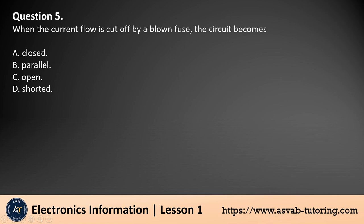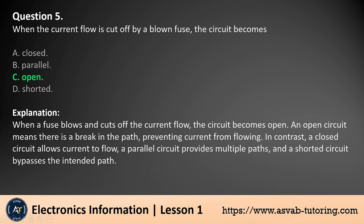Question 5. When the current flow is cut off by a blown fuse, the circuit becomes: a. Closed, b. Parallel, c. Open, d. Shorted. The answer is c. When a fuse blows and cuts off the current flow, the circuit becomes open. An open circuit means there is a break in the path, preventing current from flowing. In contrast, a closed circuit allows current to flow, a parallel circuit provides multiple paths, and a shorted circuit bypasses the intended path.